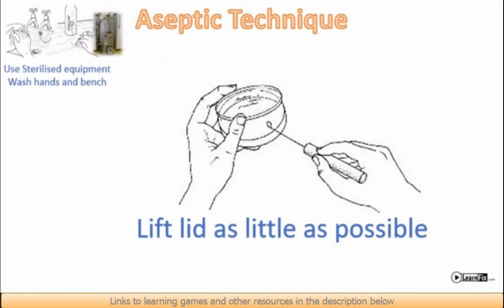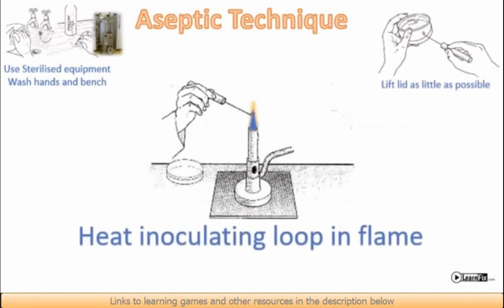Working beside a lit Bunsen burner is also helpful because that causes a current of rising air to prevent contaminants such as bacteria from dropping down onto your work.